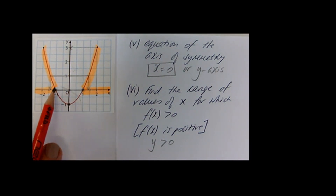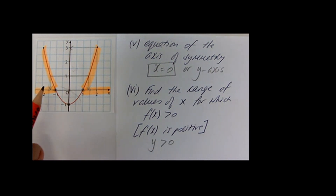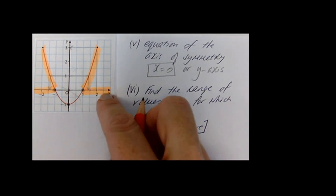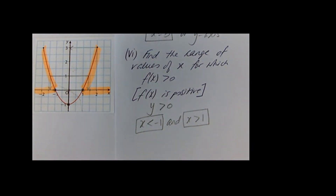If you are in between the two roots, for example x equals 0, that coordinate point gives a value of minus 1 — that's not positive. But if I take minus 2, which is beyond minus 1, that gives a value of 3, which is positive. So it is the x values smaller than minus 1 going that way, and greater than 1 going the other way. So: x less than minus 1, and x greater than 1. That can also be written as x less than minus 1 but x greater than 1.